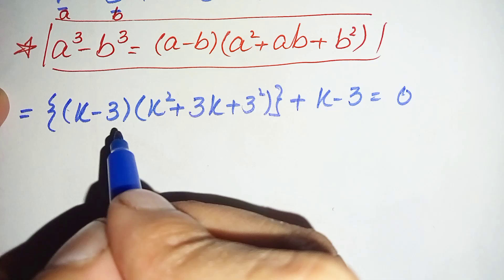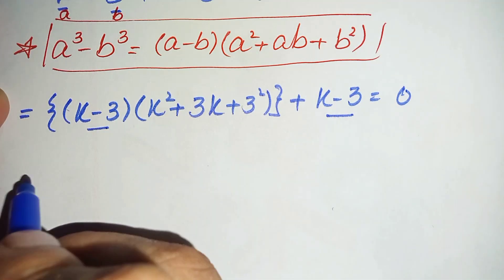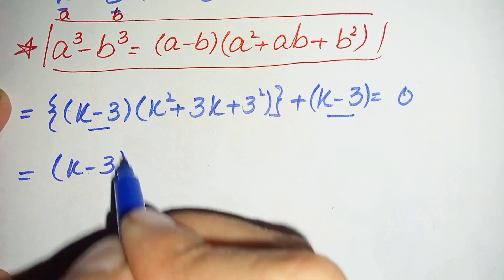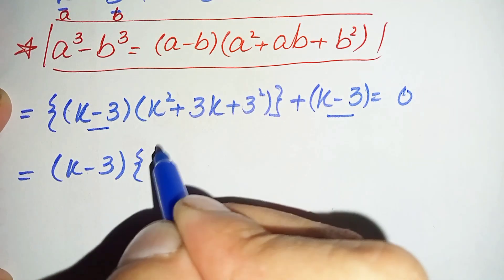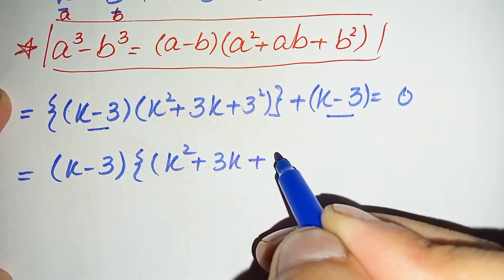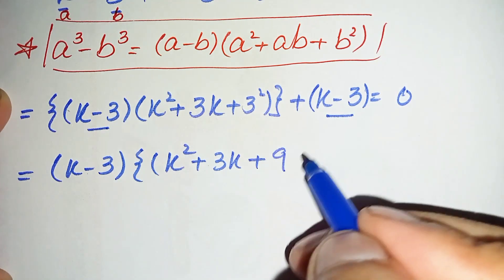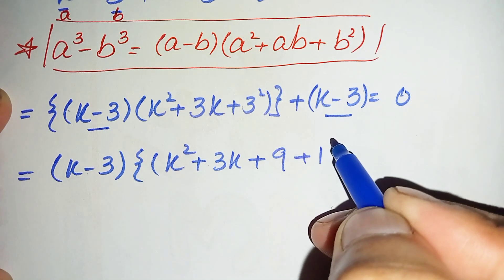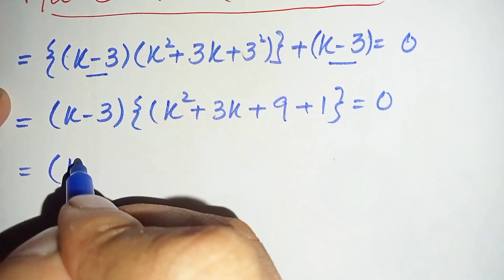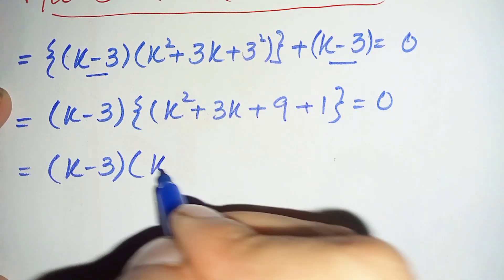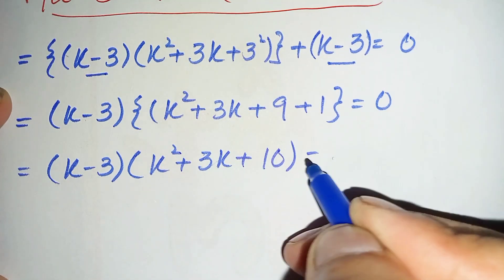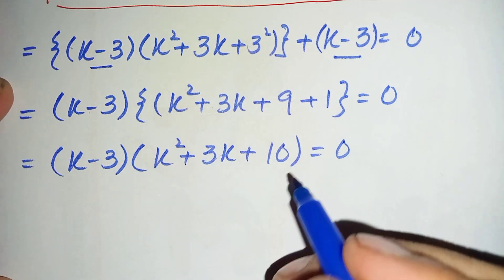Now we take k minus 3 as common from these two terms. This becomes k minus 3, times k square plus 3k plus 9 plus 1, is equal to zero. Simplifying, this becomes k minus 3, times k square plus 3k plus 10, is equal to zero.